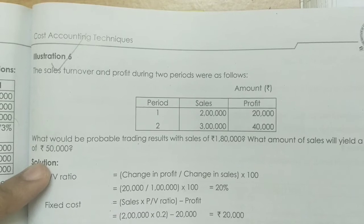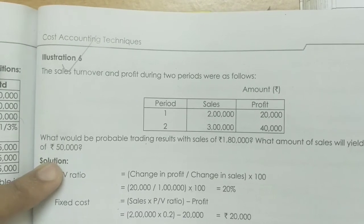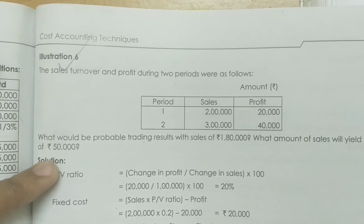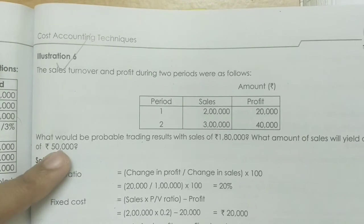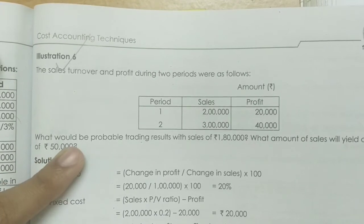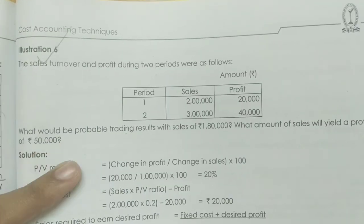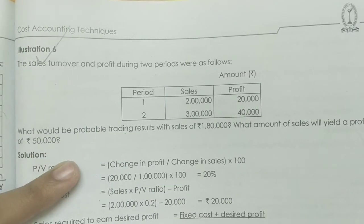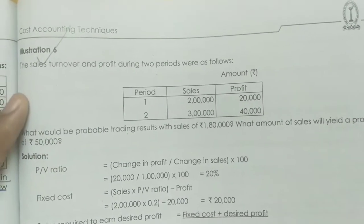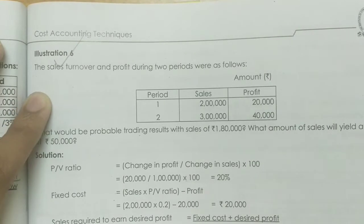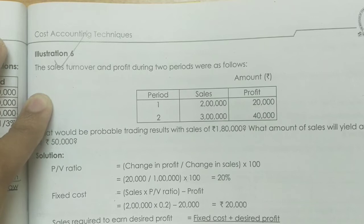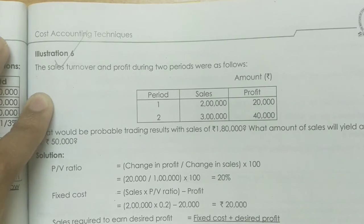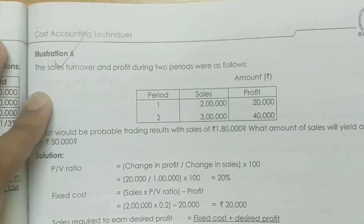In this lecture, we will show you the trading results. How much is the contribution? We will show you the results. What amount of sales will yield a profit of $50,000? So we have to do a lot of sales and generate profit. That's the basic equation.